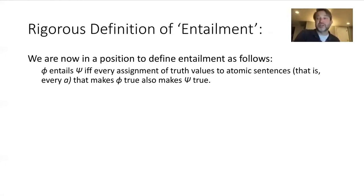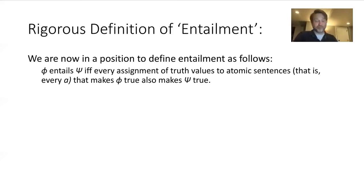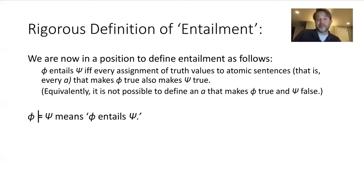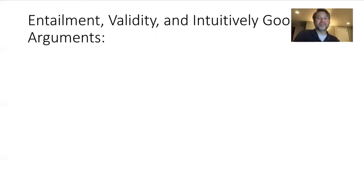Up to this point, we've been thinking about this notion in terms of: it's not possible for the premises to be true without the conclusion being true. But now we have a very rigorous notion. Phi entails psi if and only if every assignment of truth values to the atomic sentences — every alpha, every model of those sentences — that makes phi true also makes psi true. Equivalently, it's not possible to define an alpha that makes phi true and psi false. We'll use what's called the double turnstile to express entailment.